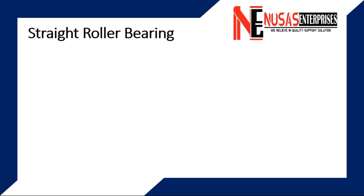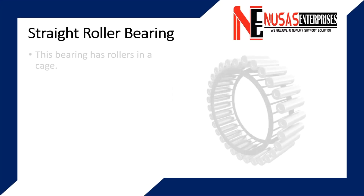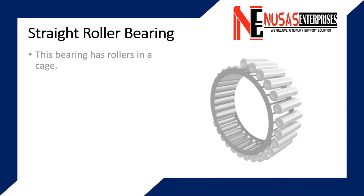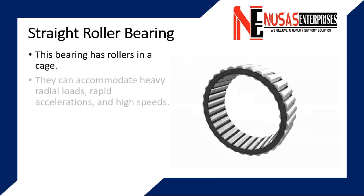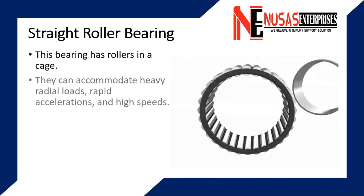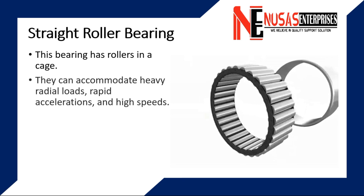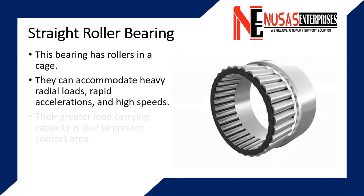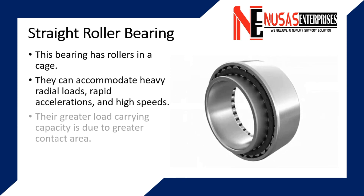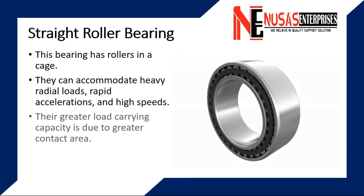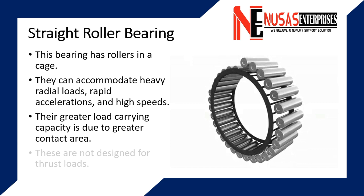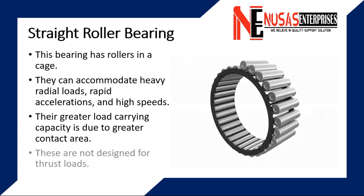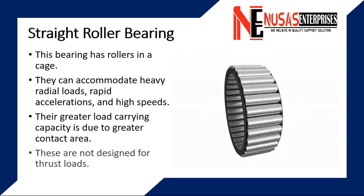Straight roller bearings have rollers in a cage. They can accommodate heavy radial loads, rapid accelerations, and high speeds. Their greater load carrying capacity is due to greater contact area. These are not designed for thrust loads.